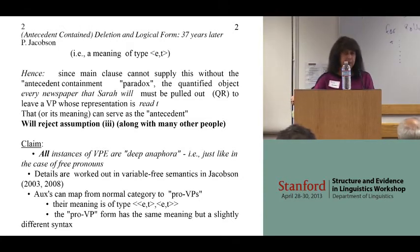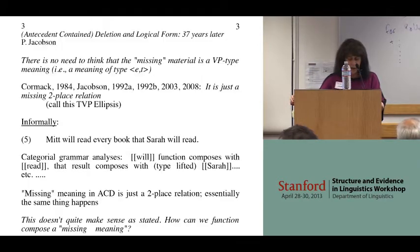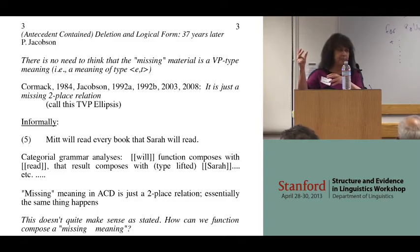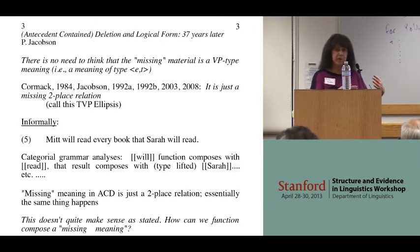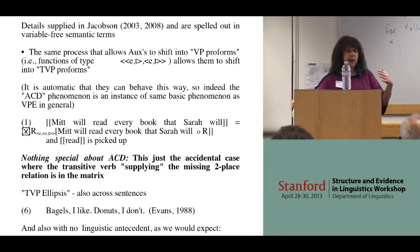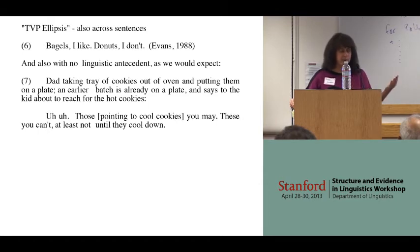I want to say that exactly the same thing is going on in the case where 'that' isn't there. Roughly what you get in the antecedent contained case is what I show in example four. The actual meaning is a function looking for a two-place relation R, and it maps that relation into 'Mitt will read every book that Sarah will function-compose R.' The missing meaning is picked up from having been made salient because it was just named in the main clause — 'read' — picked up just like in VP ellipsis. If this is all correct, then there's nothing really special about ACD; it's kind of a misnomer. ACD is just the case where the missing meaning happens to be supplied by a verb which is in the matrix clause.